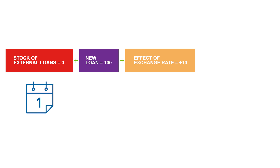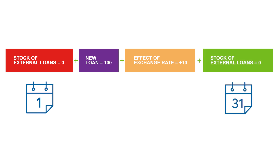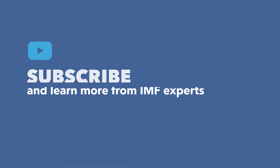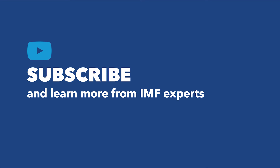So the change between the opening and closing balance sheet values of this external loan is explained by both these flows — the borrowing of 100 and the exchange rate effect of 10 — which produces a closing balance sheet value of 110. The integration of stock positions and economic flows produces a complete and coherent macroeconomic framework that facilitates all kinds of economic analyses.